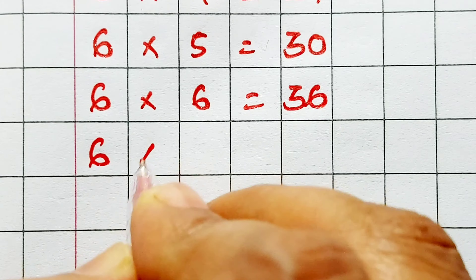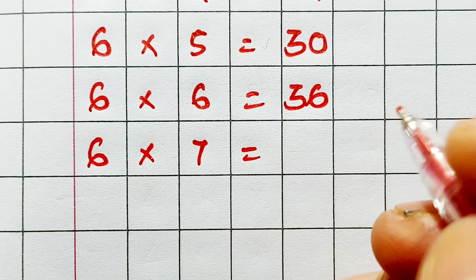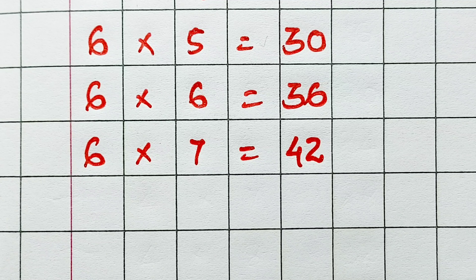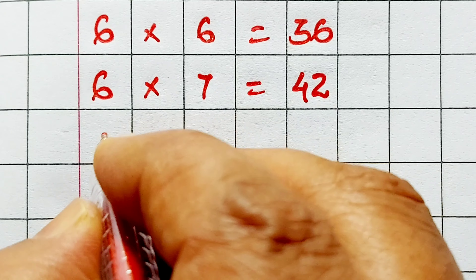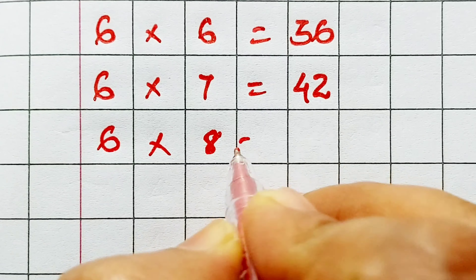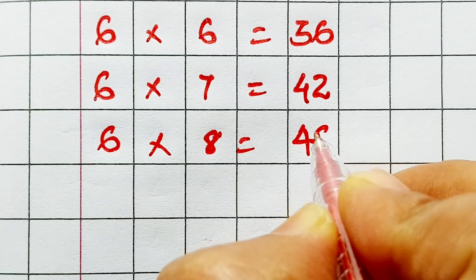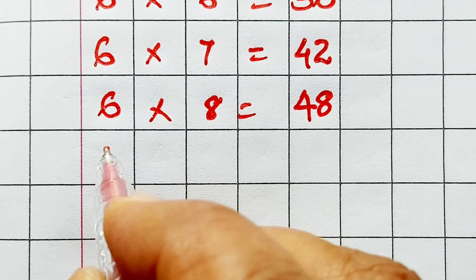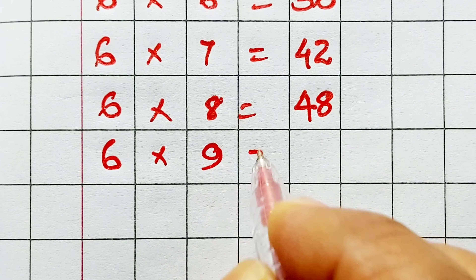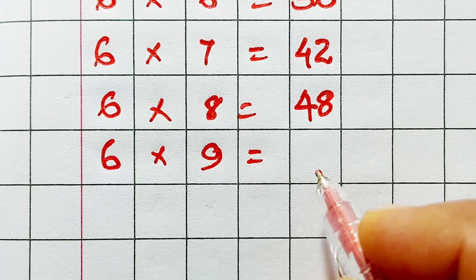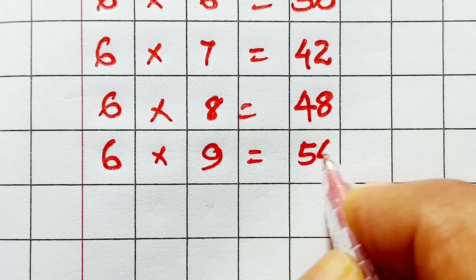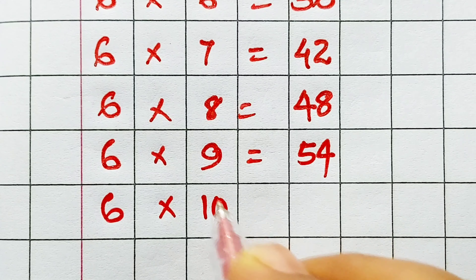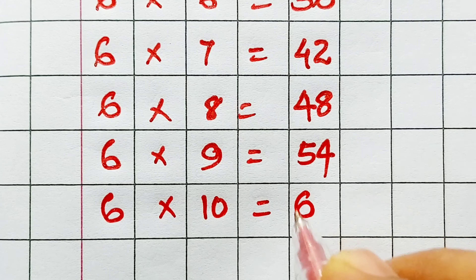Six seven's are forty-two. Six eight's are forty-eight. Six nine's are fifty-four. Six ten's are sixty.